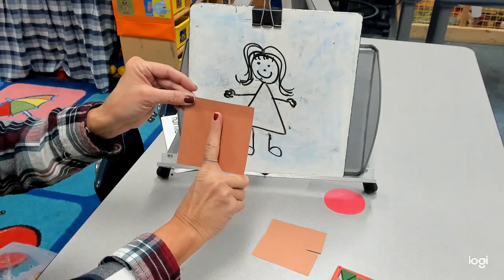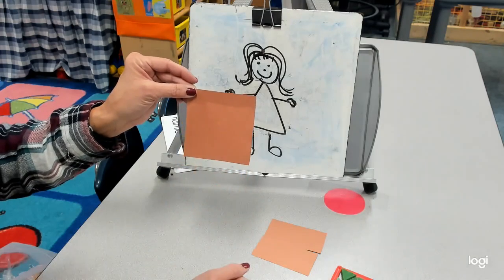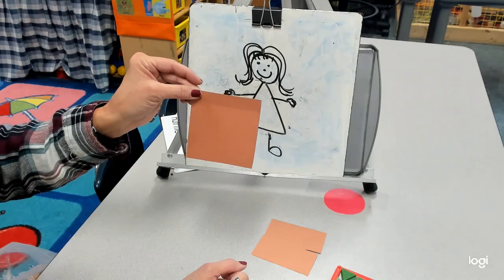And if I make a vertical, look, I'm still going to have two rectangles. I don't want rectangles. I want triangles.